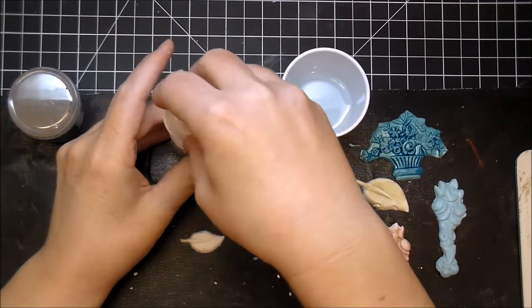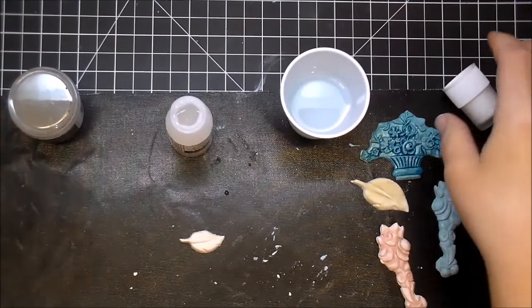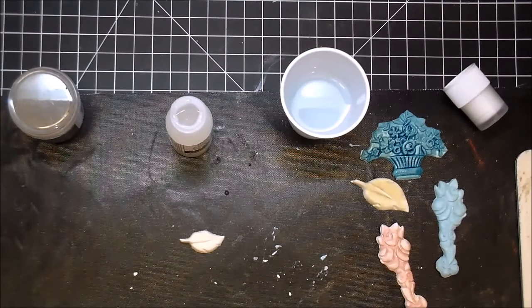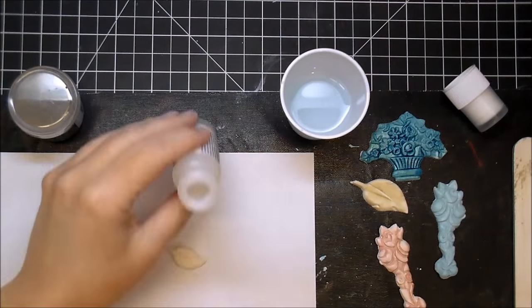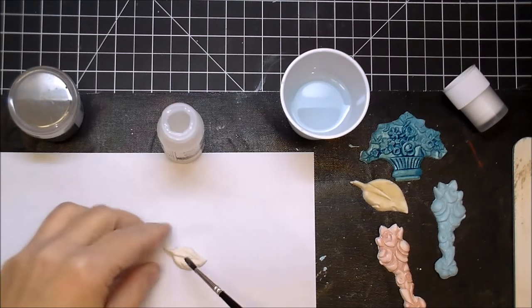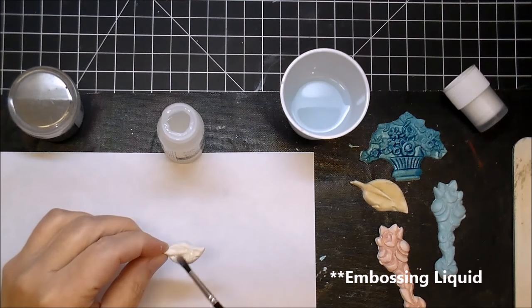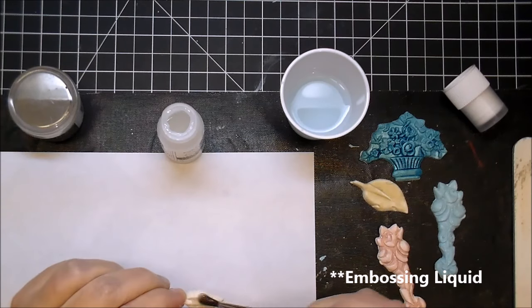I'm going to paint on my Embossing Dauber. Let me grab a scrap piece of paper here. And I'm going to use that same paint brush and paint on my embossing powder. I'm going to make sure I get good coverage here.